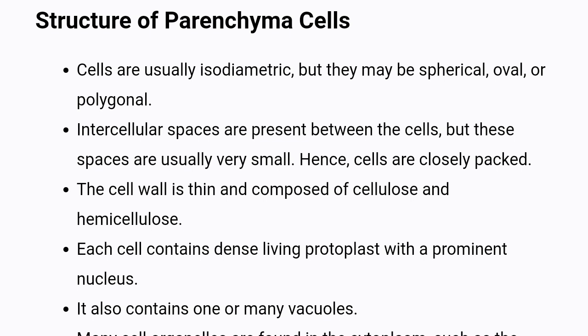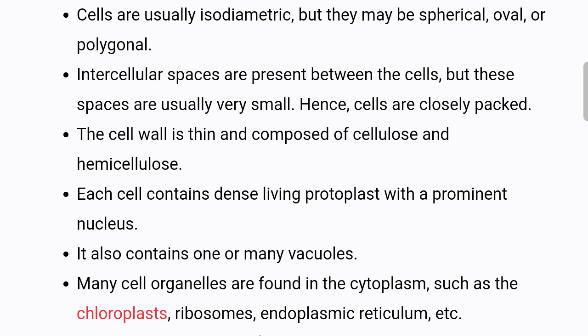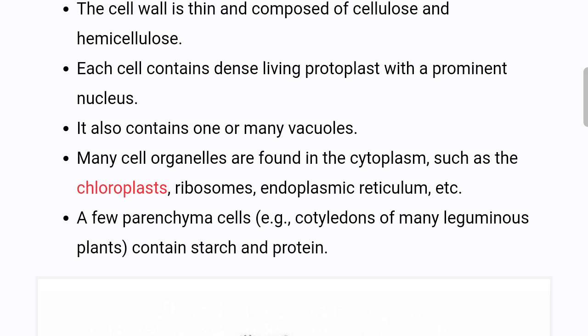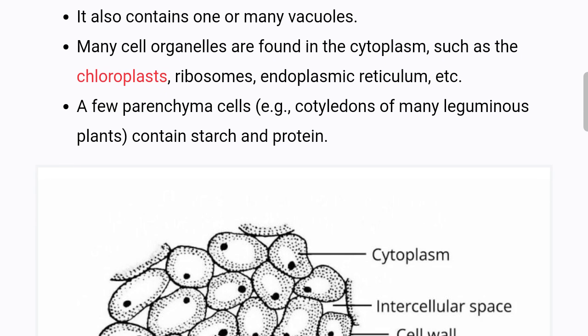Hence, cells are closely packed. The cell wall is thin and composed of cellulose and hemicellulose. Each cell contains a dense living protoplast with a prominent nucleus. It also contains one or many vacuoles. Many cell organelles are found in the cytoplasm, such as the chloroplasts, ribosomes, endoplasmic reticulum, etc. A few parenchyma cells also contain starch and protein.